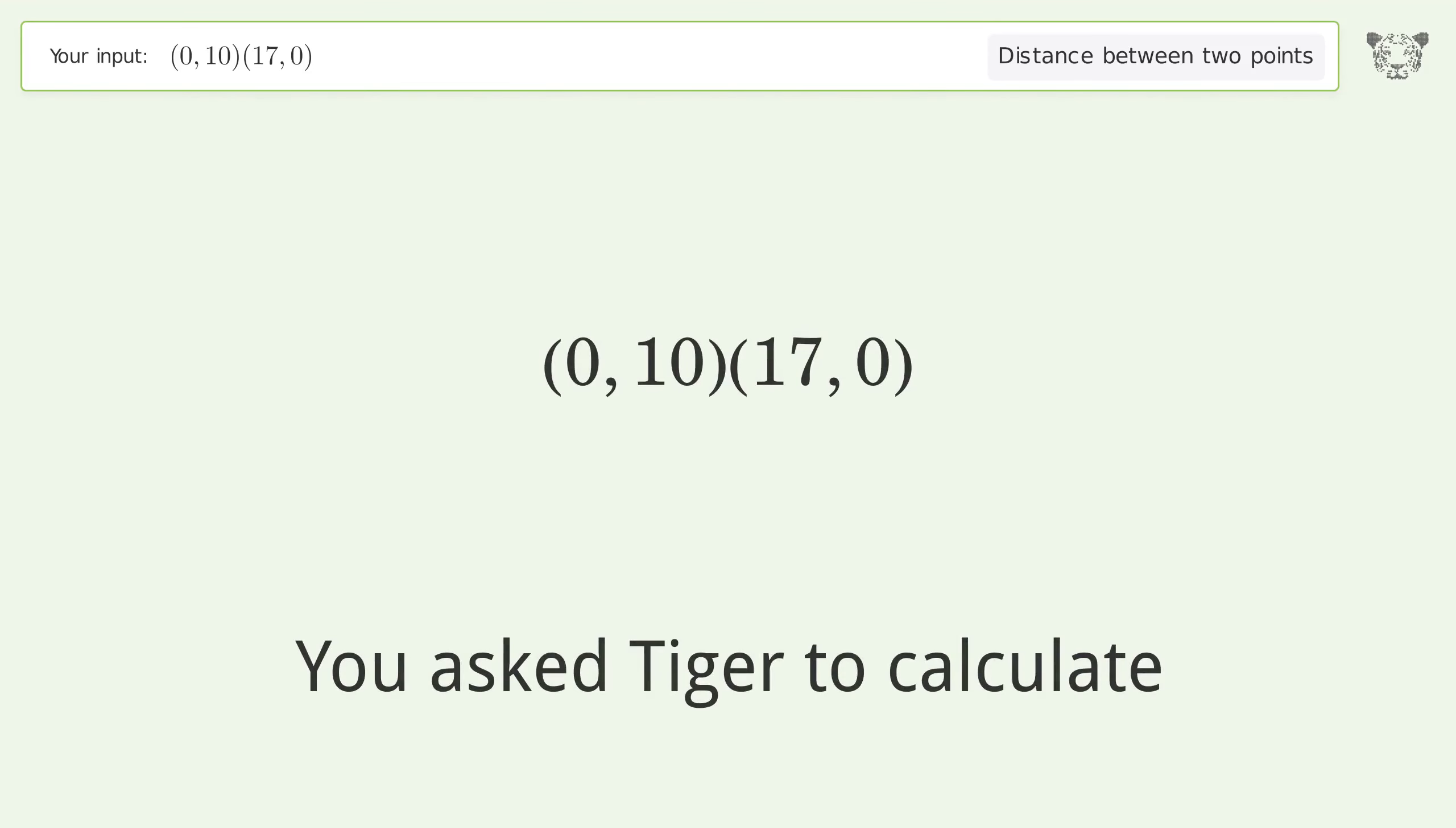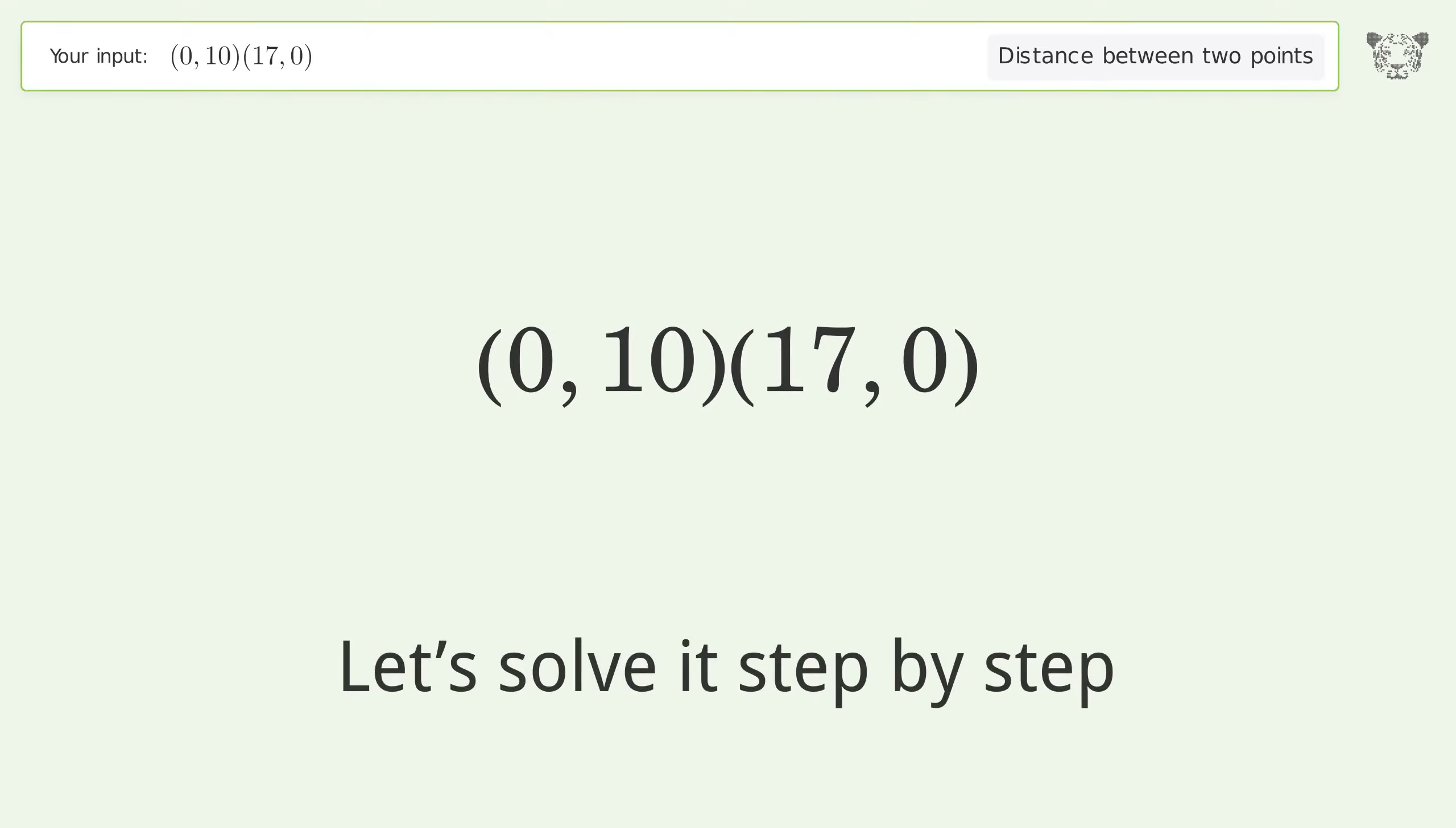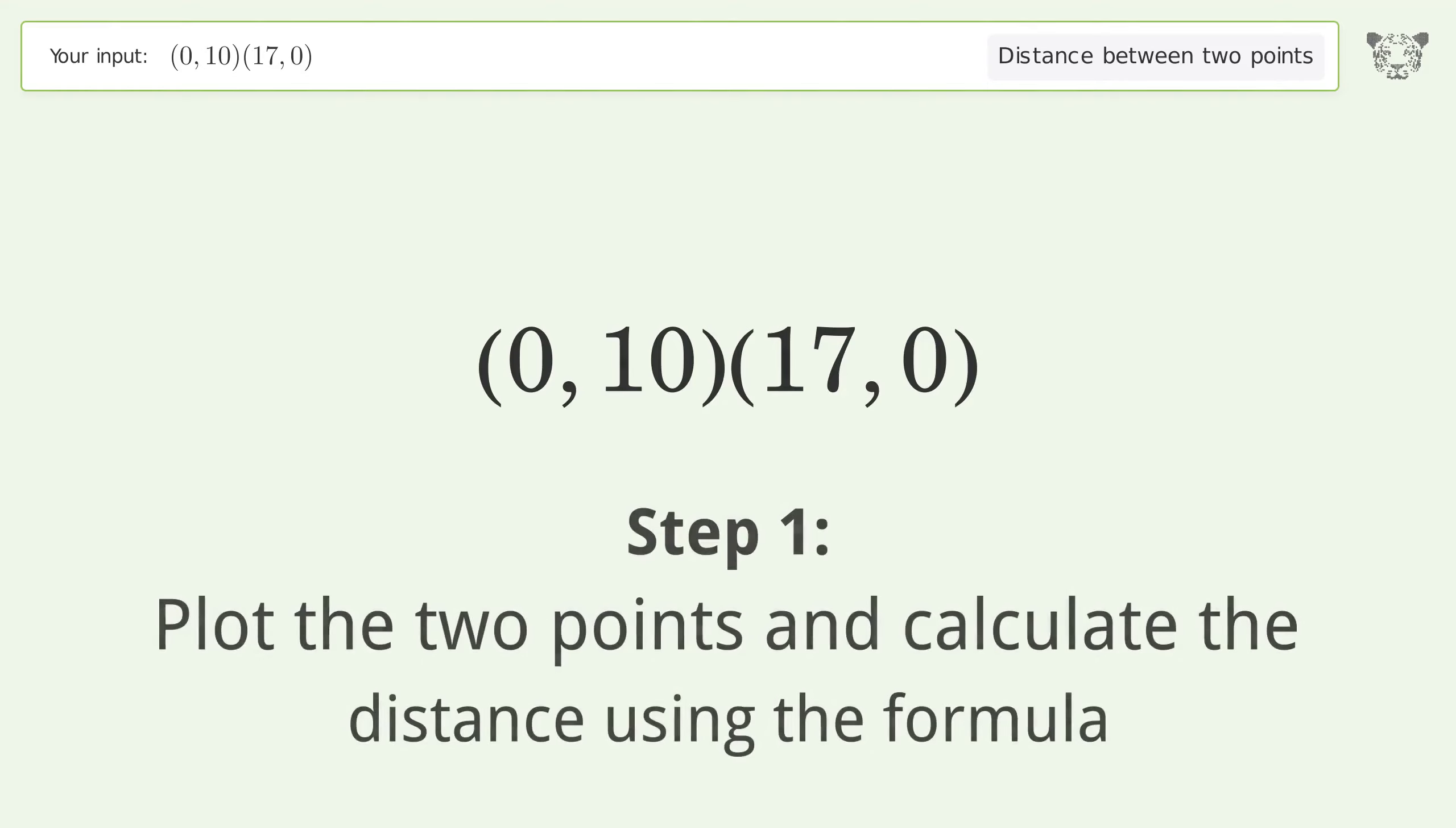You asked Tiger to calculate the distance between two points. The distance is the square root of 389, or 19.723. Let's solve it step by step: plot the two points and calculate the distance using the formula.